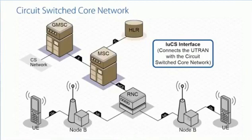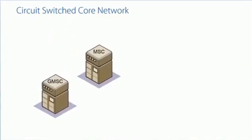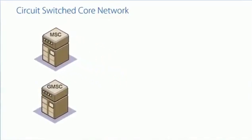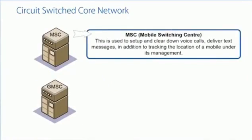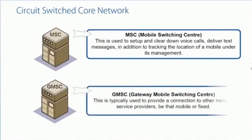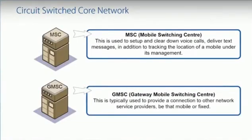We're going to connect up to a switch — the MSC, or Mobile Switching Centre. In the circuit switch core network, we have MSCs, Mobile Switching Centres. These are all about making and receiving calls, managing text messaging, and they also keep information about where the mobile is currently located. There is also a gateway MSC, which is all about interconnecting to other service providers — fixed operators, mobile operators, etc.